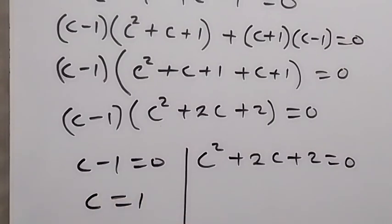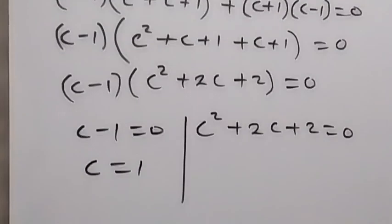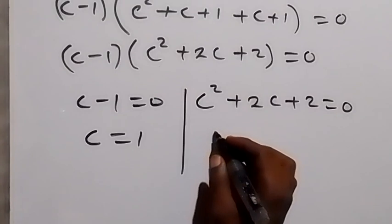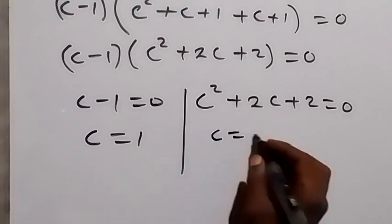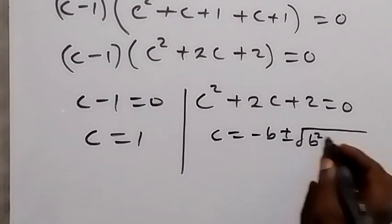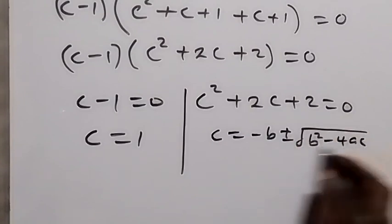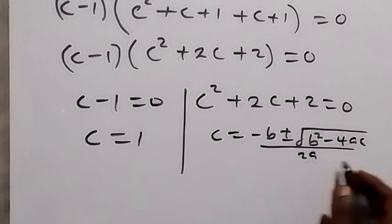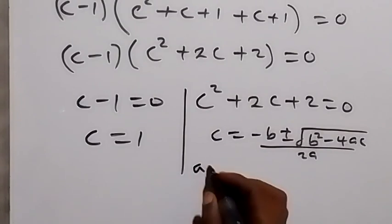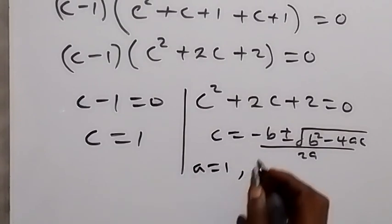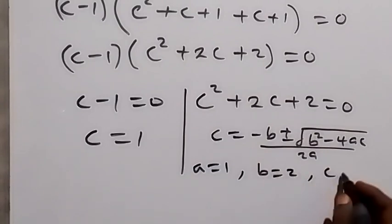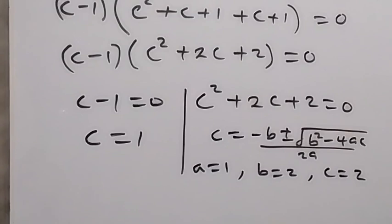From the first case we have c equals 1. For the other case we have a quadratic equation, so we use the quadratic formula: c equals minus b plus or minus square root of b squared minus 4ac, over 2a. Here a equals 1, b equals 2, and c equals 2.